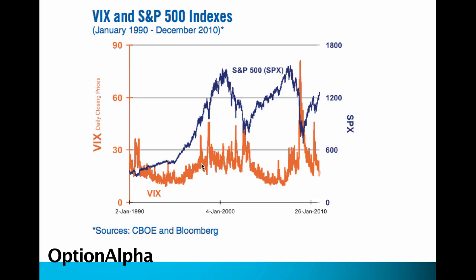That's really the gist of understanding the VIX at this point. You can see that as the market starts to become more volatile and more erratic, particularly near 2000 for the S&P, then the VIX started to increase in price near 30.